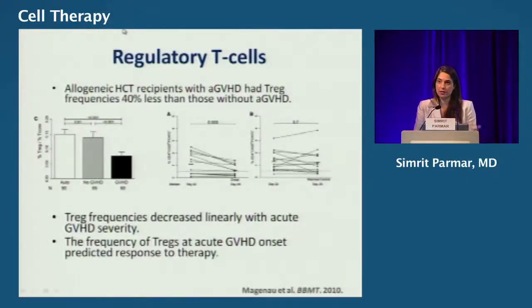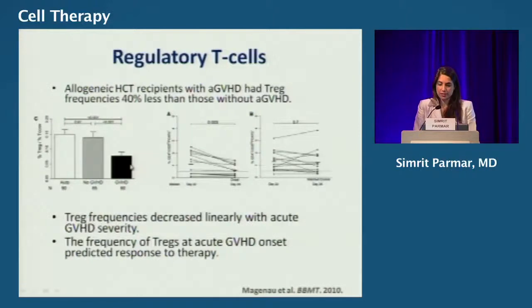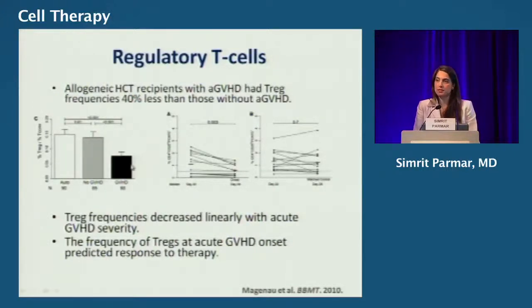What about our transplant recipients? Is there any data — even circumstantial — that regulatory T cells exist and have any effect on GVHD? A study has shown that patients who have no GVHD have circulating regulatory T cells, but patients who do have GVHD have significantly fewer regulatory T cells, and that number decreases linearly with the onset of acute GVHD.